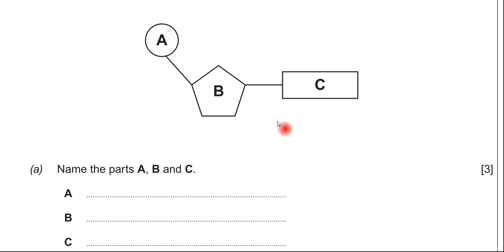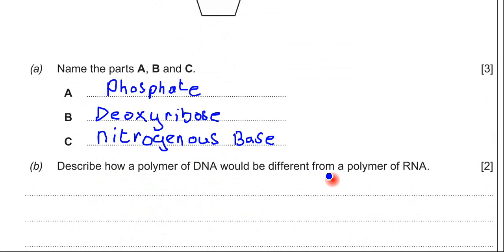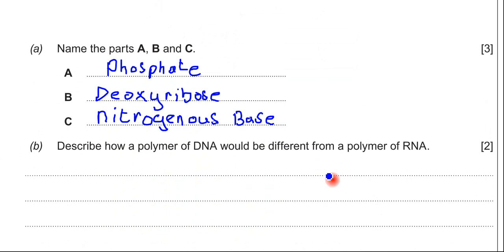Part C is the nitrogenous base — you could also call that the organic base. The next part of the question asks you to describe how a polymer of DNA would be different from a polymer of RNA.